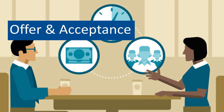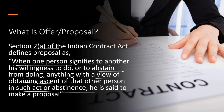When do we say there is an offer and it has been accepted? The basis of any contract is an agreement, and an agreement is nothing but a combination of offer and its acceptance. As per Section 2(a), when one person signifies to another his willingness to do or abstain from doing anything, with the view of obtaining assent of that other person in such an act or abstinence, he is said to make a proposal or an offer.